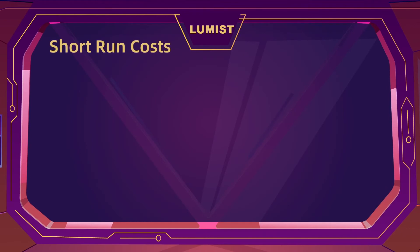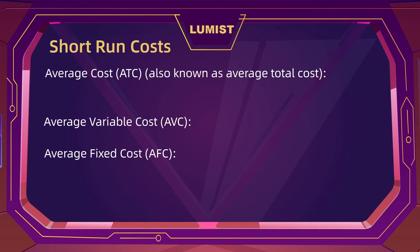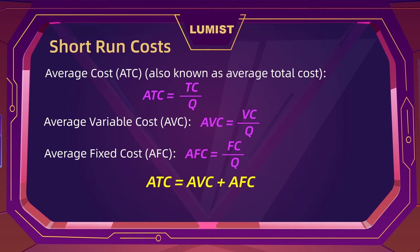Now that we know what fixed and variable costs are, we can calculate a number of different things. We can calculate average total cost as the total cost divided by the number of units produced. In the same way, we can calculate average variable cost and average fixed cost by dividing the variable cost and fixed costs by the number of units as well. Just like total cost equals fixed costs plus variable costs, average total cost is equal to average variable costs plus average fixed costs.